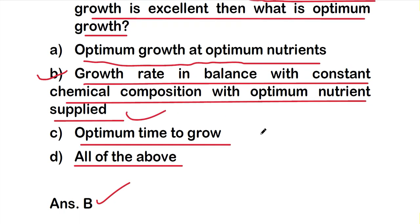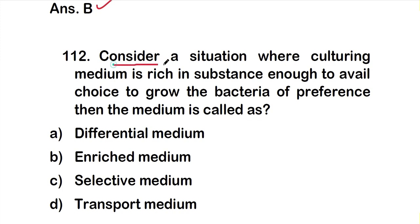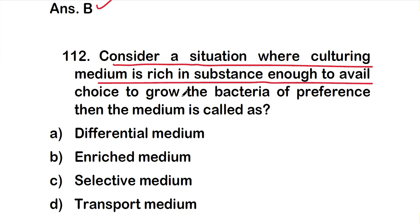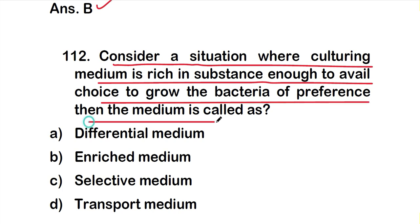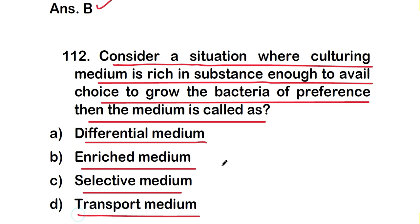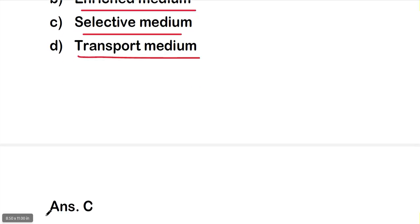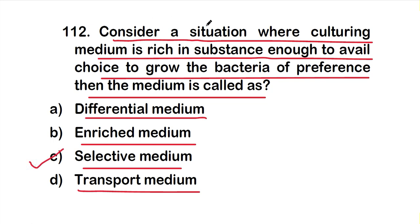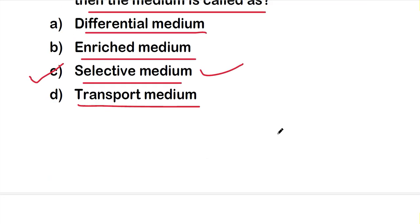Question 112: Consider a situation where culturing media is rich in substance enough to allow choice to grow the bacteria of preference. Then the medium is called option A, differential media; option B, enriched media; option C, selective media; or option D, transport media. The right answer is option C, selective media.